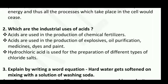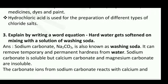Question number two: Which are the industrial uses of acids? Acids are used in the production of chemical fertilizers, explosives, oil purification, medicines, dyes, and paint. Hydrochloric acid is used for the preparation of different types of chloride salts. These are the industrial uses of acids.